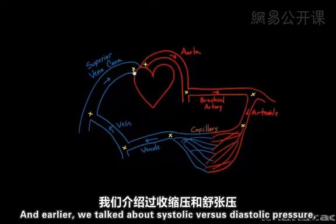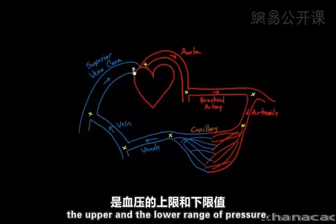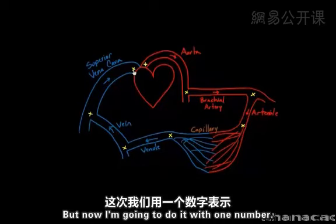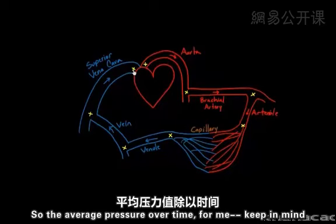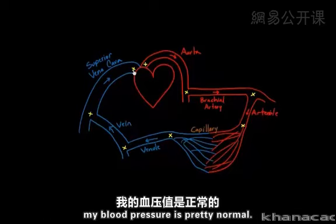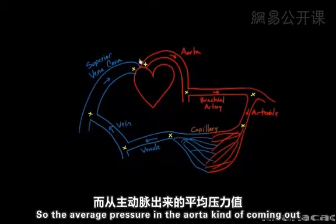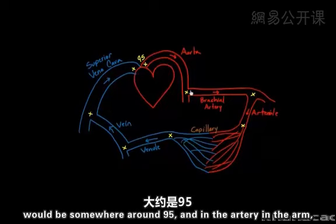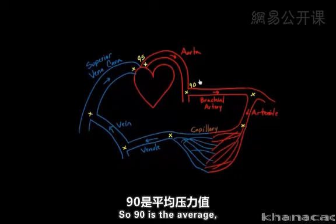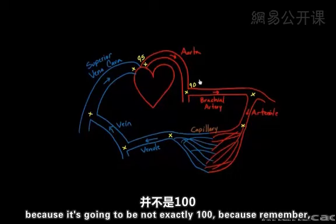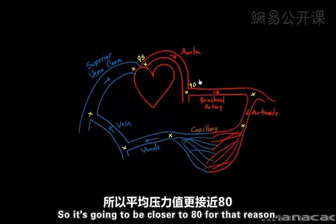These pressures are represented in millimeters of mercury — the pressure the blood exerts on the wall at each point. Earlier we talked about systolic versus diastolic pressure using two numbers, but now I'm using one number: the average pressure over time. My blood pressure is pretty normal, around 120 over 80 in my arm. So the average pressure in the aorta coming out would be around 95, and in the brachial artery around 90 — somewhere between 80 and 120. It's closer to 80 because the heart spends more time in diastole than systole.